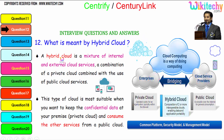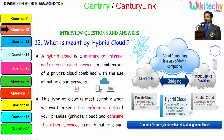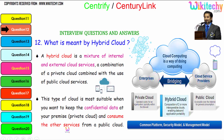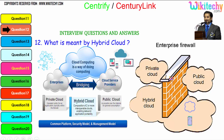By definition, a hybrid cloud is a mixture of internal and external cloud services — a combination of a private cloud combined with the use of public cloud services. This type of cloud is most suitable when you want to keep the confidential data at your premise and consume other services from a public cloud. You are able to see the firewall aspects: private cloud is really secure, and you will be having a specific firewall.